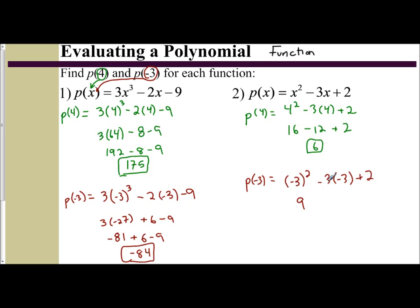So (-3)² is a positive 9. -3 times (-3) is a positive 9. And then plus 2. So 9 plus 9 is 18, plus 2 is 20.